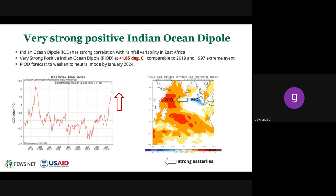We look for the different phases of the Indian Ocean Dipole. At the moment, we have a very strong Indian Ocean Dipole at plus 1.85 degrees Celsius, based on differential temperatures between the East Indian Ocean and the West Indian Ocean—adjacent to our region—which is showing warmer than normal conditions. This is influencing strong easterly winds that bring a lot of moisture and fuel convective development and lots of rains in our area. At the moment, we are almost comparable to 2019, which was an event that had widespread extreme rains across Eastern Africa.